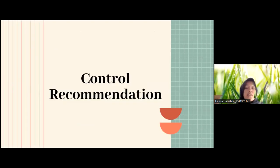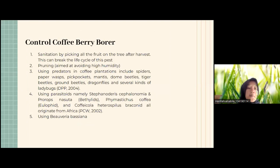Control recommendations: First, for the coffee berry borer — picking all fruit from the tree after harvest to break the pest's life cycle; second, burning infested material and avoiding high humidity; third, using predators in the coffee plantation including spiders, supermorbs, mirid beetles, tiger beetles, and separate kinds; and using parasitoids namely Stefanorus rudis, Cephalonomia, Prorops nasuta, Pematicus kofii, and Heterospilus brajonic, all originating from Africa. The last is using Beauveria bassiana as a biological control agent.